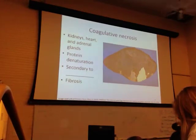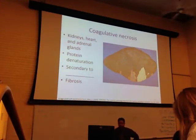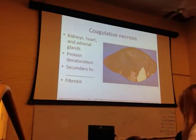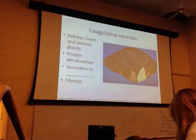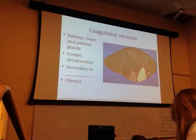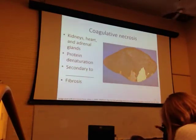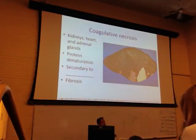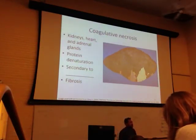Here you can see splenic tissue with a prominent wedge-shaped infarct. It looks like what was drawn on the board because the vascular pattern of kidney, heart, adrenal glands, and spleen is branch-like — if you cut off blood flow proximally, you get this wedge-shaped infarct distally. Here is an older infarct, more of an older scar, but a similar wedge shape. The proteins denature in that region and become non-functional.